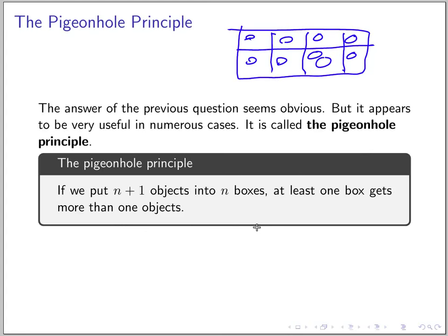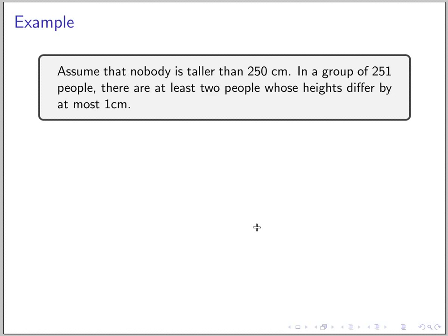Let's see some example of its usage. Assume that nobody is taller than 250 centimeters. In a group of 251 people, there are at least two people whose heights differ by at most one centimeter. I'll let you think about it and try to prove it. I'll give you the proof in the next clip.